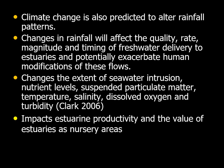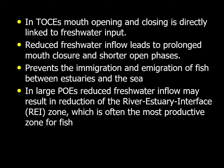Changes in rainfall will affect the quality, rate, magnitude and timing of freshwater delivery to estuaries and will potentially exacerbate human modifications of these flows. This will change the extent of seawater intrusion, nutrient levels, suspended particulate matter, temperatures, salinity, dissolved oxygen and turbidity, all of which impact estuarine productivity and the value of estuaries as nursery areas for fishes. In temporary open-closed estuaries, mouth opening and closing is directly linked to freshwater input, so reduced freshwater inflow will lead to prolonged mouth closure and shorter open phases, preventing the emigration and immigration of fish between estuaries and the sea. In larger permanently open estuaries, reduced freshwater inflow may result in a reduction of the river-estuary interface, which is often the most productive zone for fish.